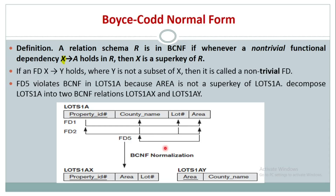Let us look into the third functional dependency. Here we have area determines county name. Is area a super key? No. This FD5 — where area determines county name — violates Boyce-Codd normal form, because whenever a non-trivial functional dependency X determines A holds, X should be the super key. Area is not a super key, so FD5 violates BCNF.